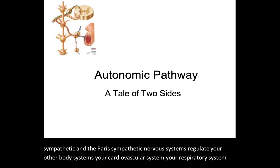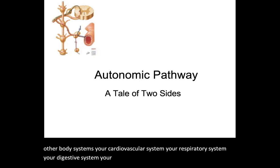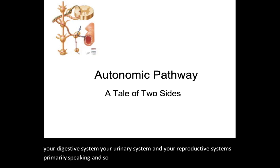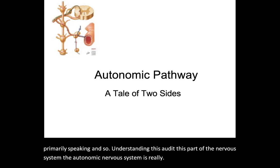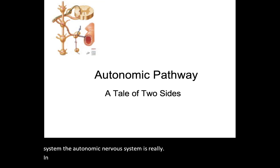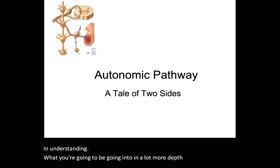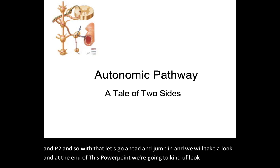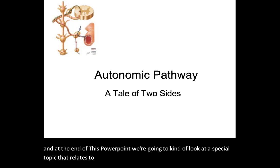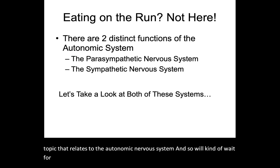your respiratory system, your digestive system, your urinary system, and your reproductive systems, primarily speaking. Understanding this part of the nervous system — the autonomic nervous system — is really critical in understanding what you're going to go into in a lot more depth once you get into AMP2. At the end of this PowerPoint, we're going to look at a special topic that relates to the autonomic nervous system, so we'll save that towards the end.